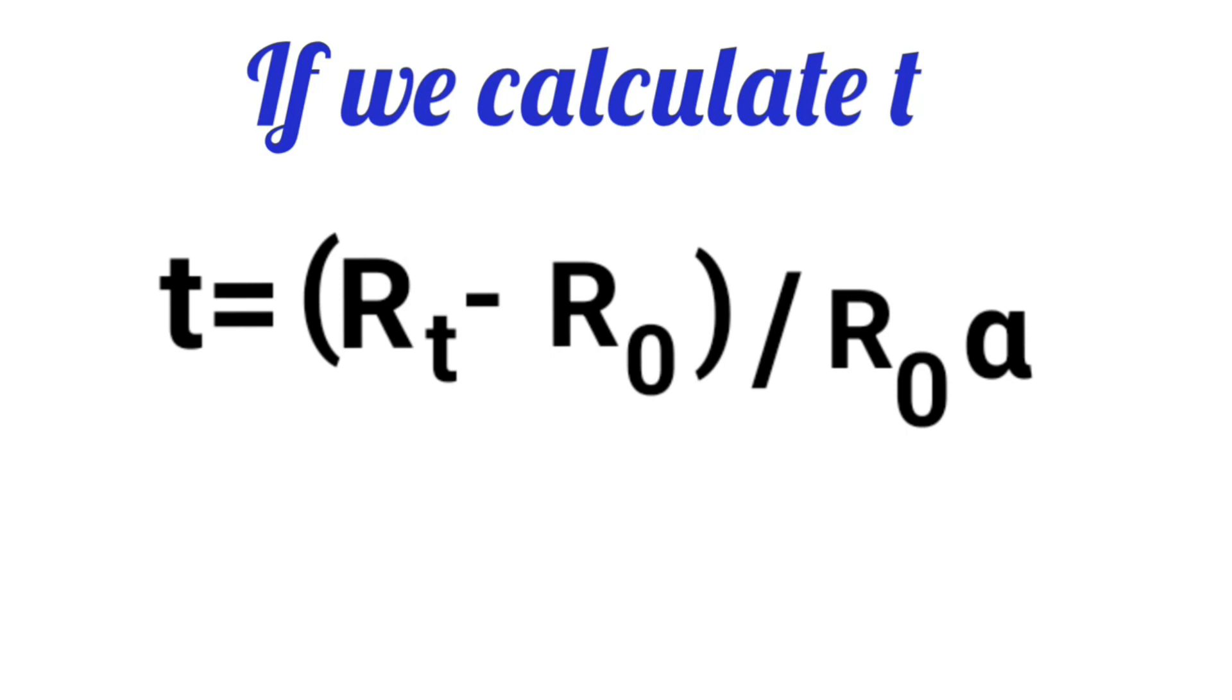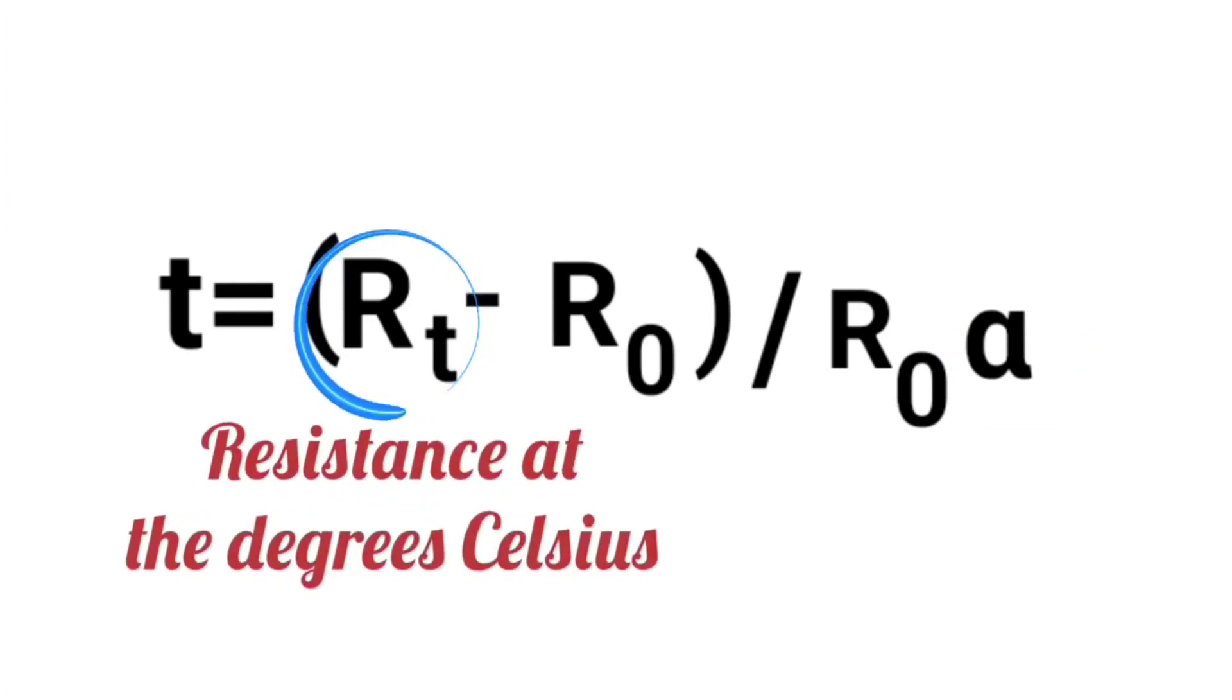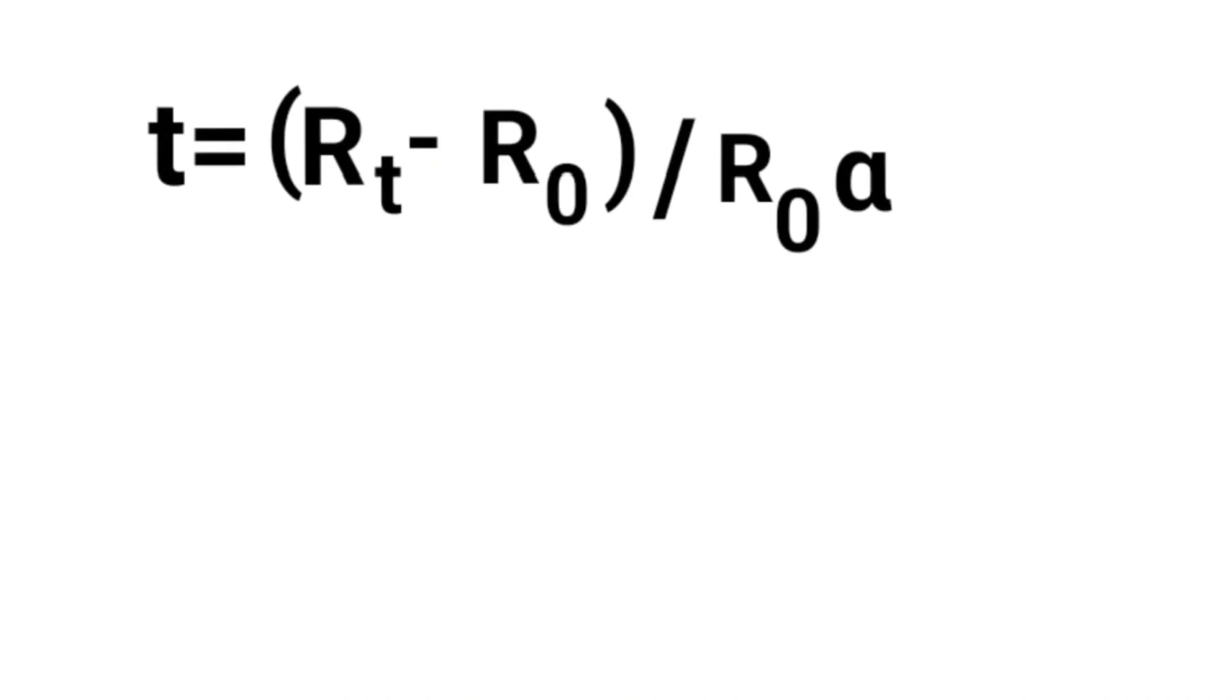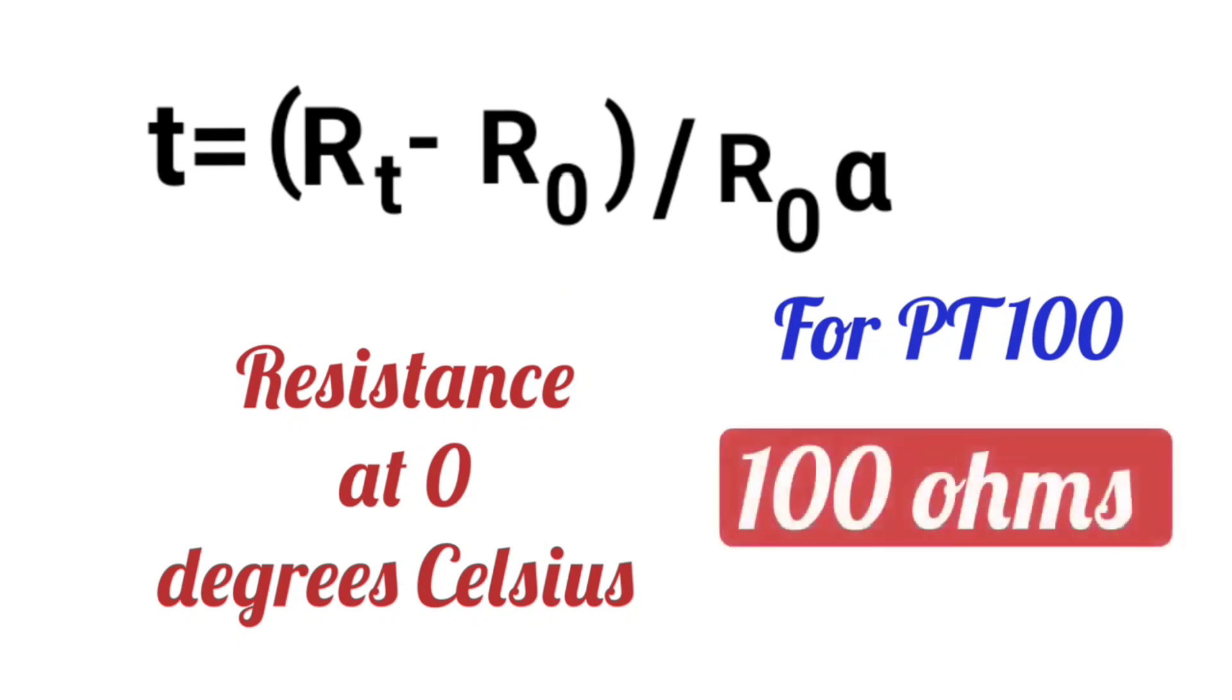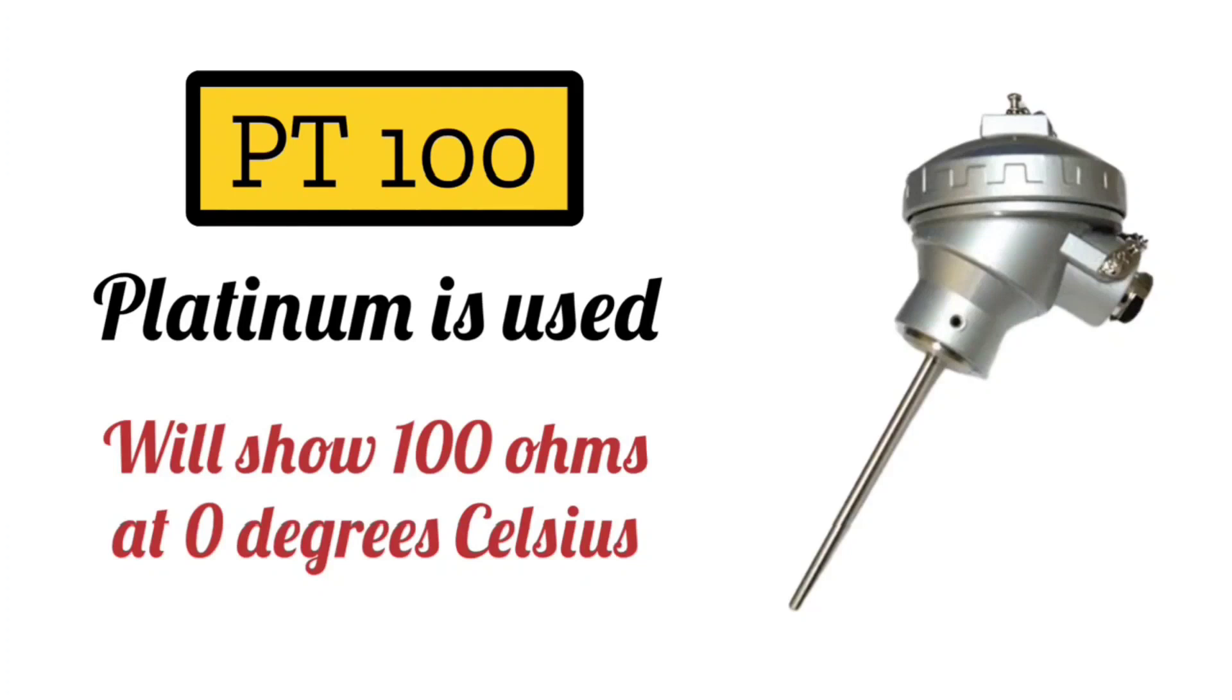Here you will see three parameters: RT, R0, and alpha. You need to calculate T. RT is the resistance at T degrees Celsius. Or understand it in this way, the resistance measured with a multimeter is RT. R0 is the resistance at 0 degrees Celsius. For PT100, the value of R0 is 100 ohms. PT100 means it's platinum RTD, and it will show 100 ohms at 0 degrees Celsius.